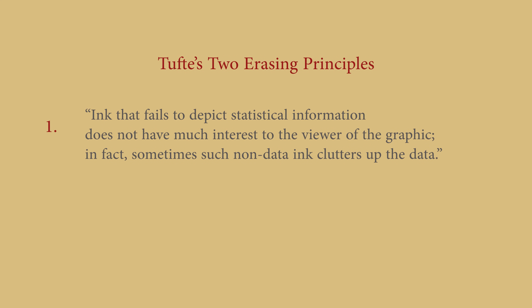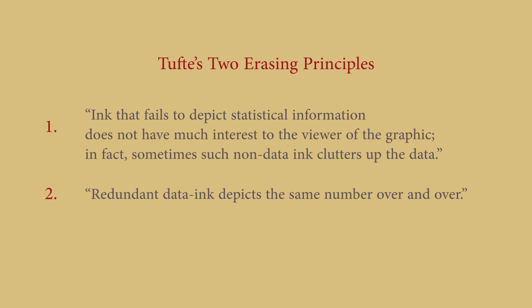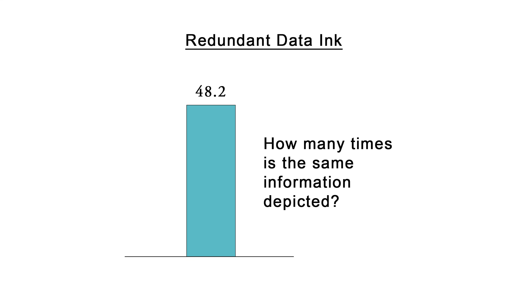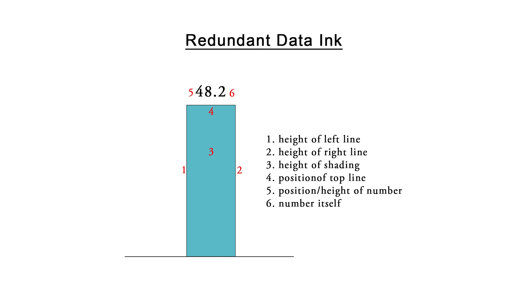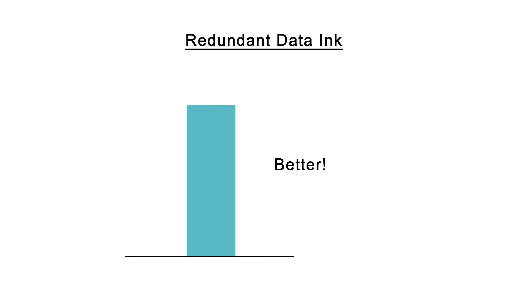There can also be redundant data ink that should be subject to Tufte's two erasing principles aimed at increasing the proportion of data ink. First, ink that fails to depict statistical information does not have much interest to the viewer — in fact, sometimes such non-data ink clutters up the data. Second, redundant data ink depicts the same number over and over. If we look at this simple graphic, how many times can you see the same information displayed? If you guessed six times, you'd be correct — so we can remove five out of the six and leave just the column color.